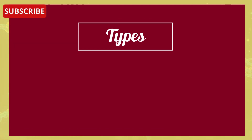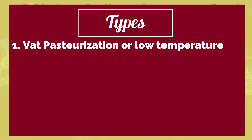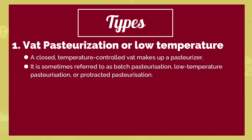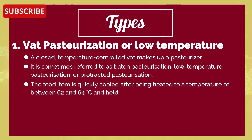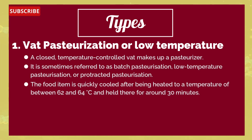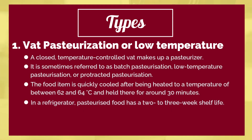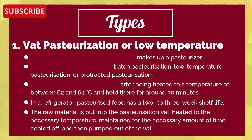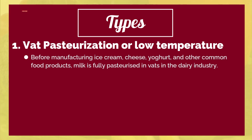The first type of pasteurization is vat pasteurization, also known as low-temperature, batch, or protracted pasteurization. The food item is heated to a temperature of between 62 and 64°C and held there for around 30 minutes, then quickly cooled in a refrigerator. Pasteurized food has a two to three week shelf life. The raw material is placed into the pasteurization vat, heated to the necessary temperature, maintained for the required amount of time, cooled, and then pumped out. Milk is fully pasteurized before manufacturing ice cream, cheese, yogurt, and other common food products in the dairy industry.